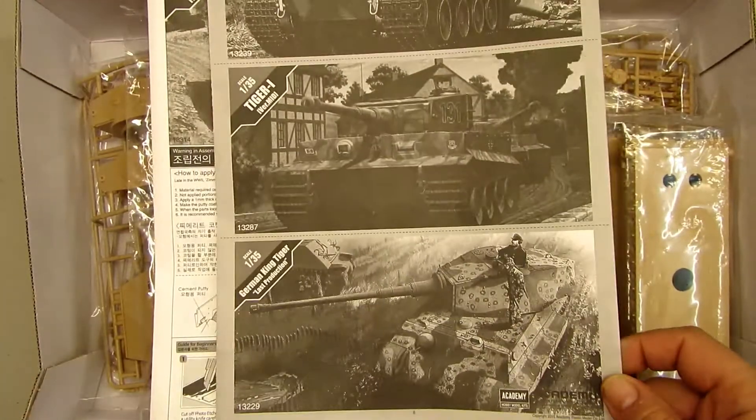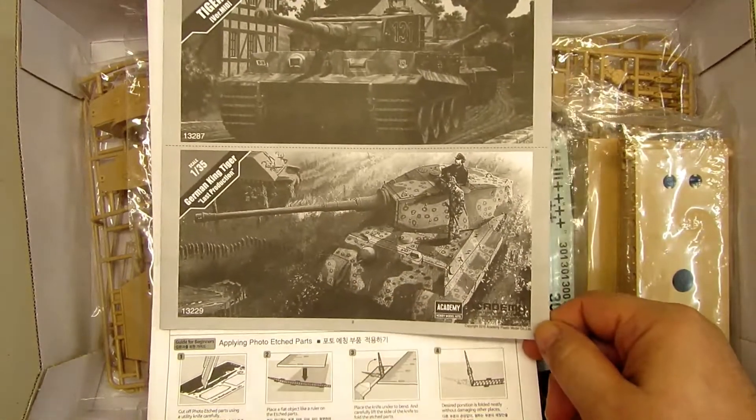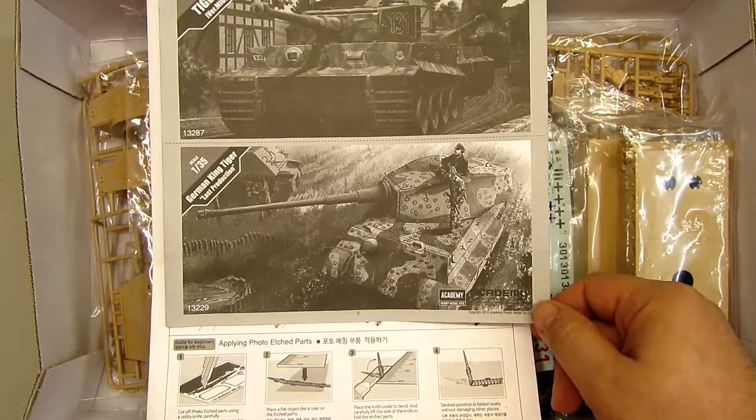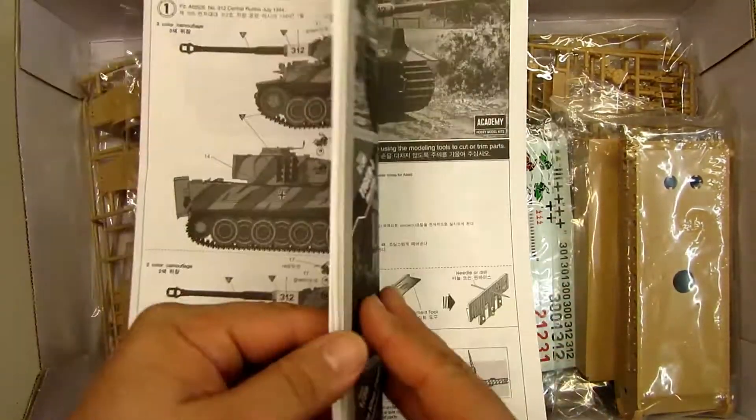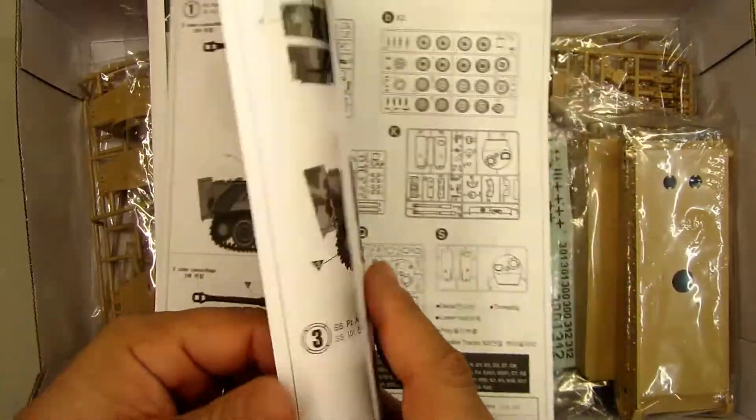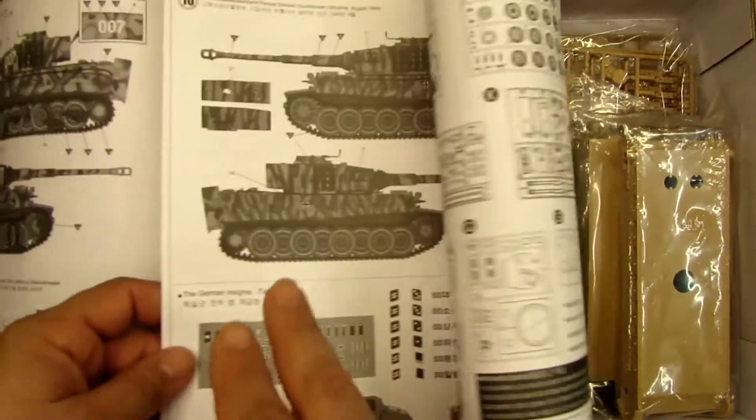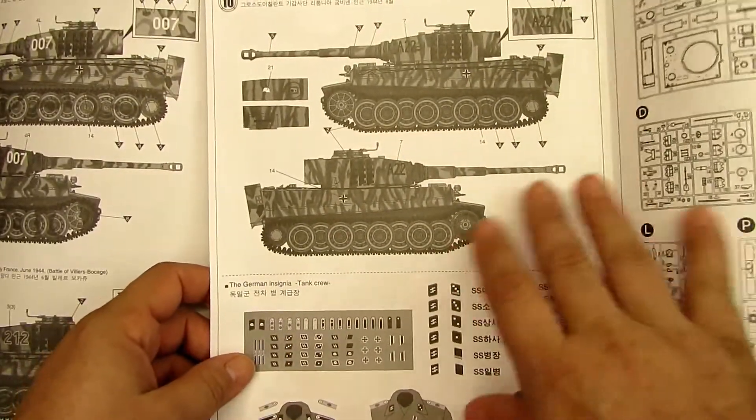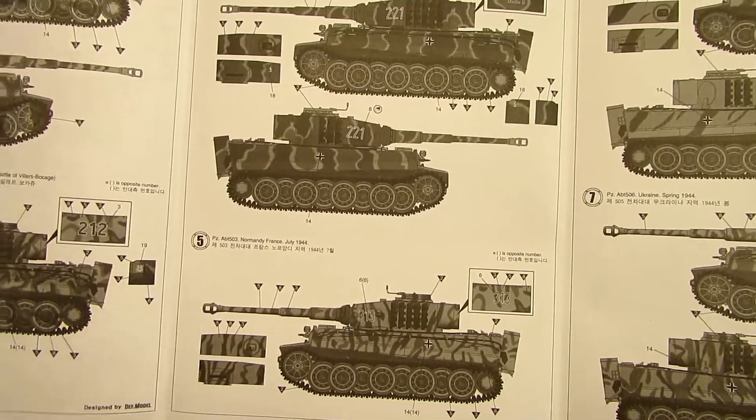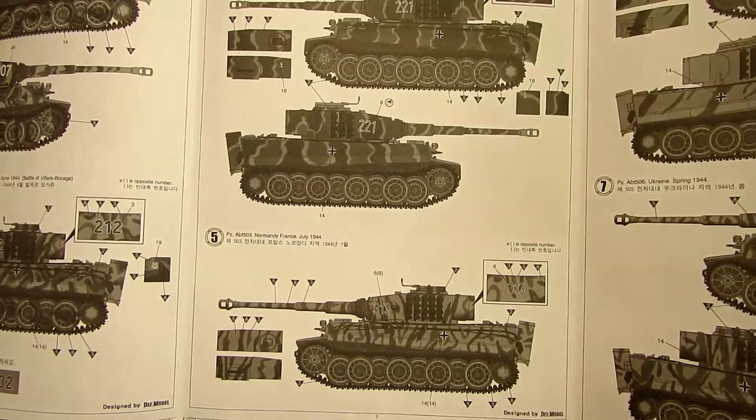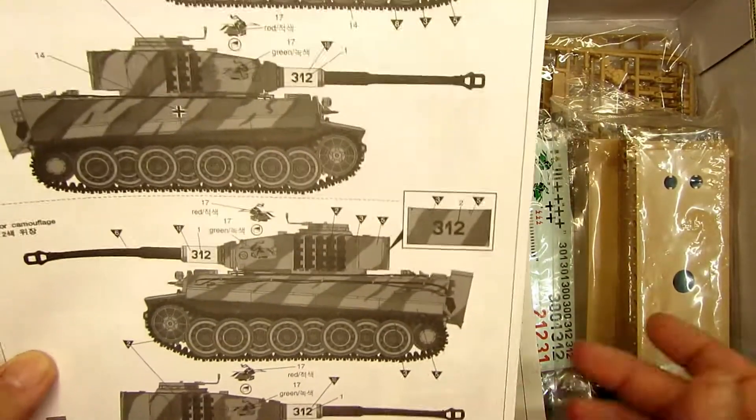You can see the 3 models they have of the Tiger 1: the early, the middle, and this is the late version. And here's the German King Tiger, the last production. This kit is very, very beautiful guys. In the back we got all these 1, 2, 3, 4, 5 versions we can do with this.